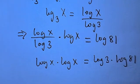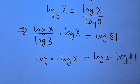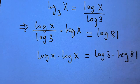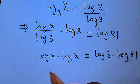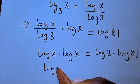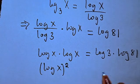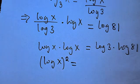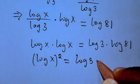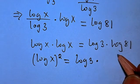From here, log x times log x becomes log x to the power of 2 on the left side. On the right, we have log 3 multiplying log 81. Now, 81 can be expressed as 3 to the power of 4.